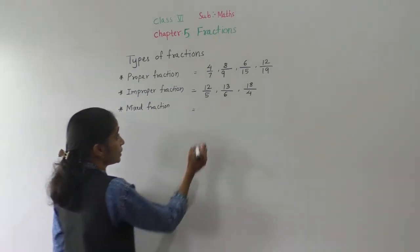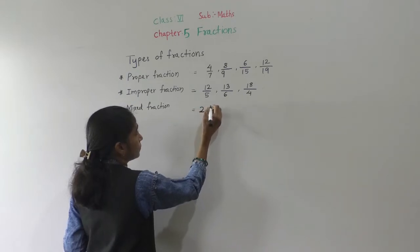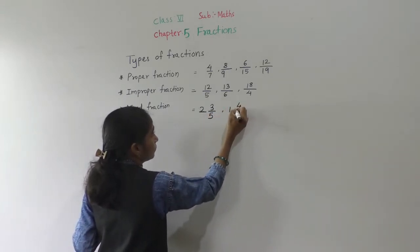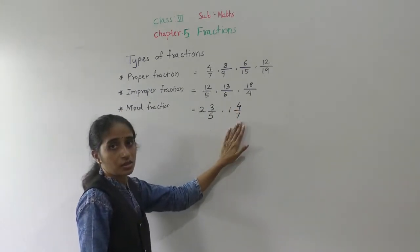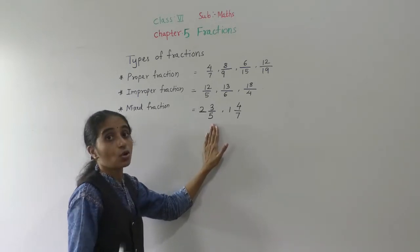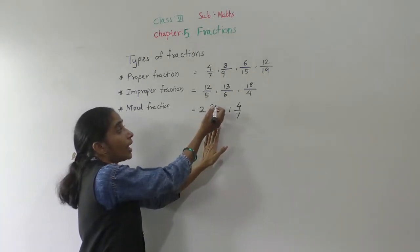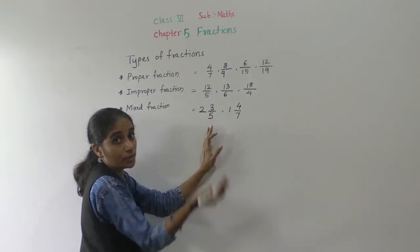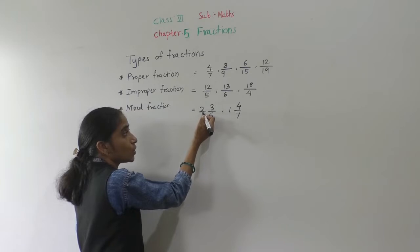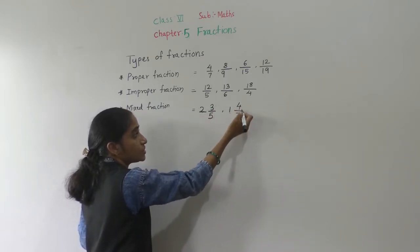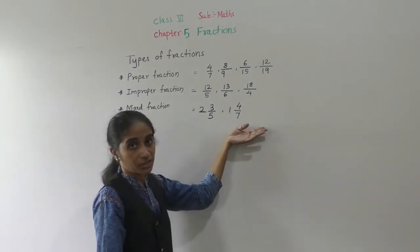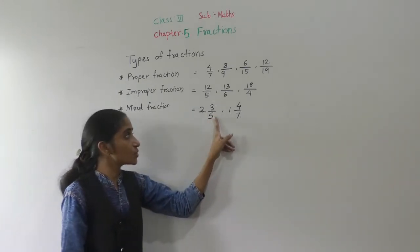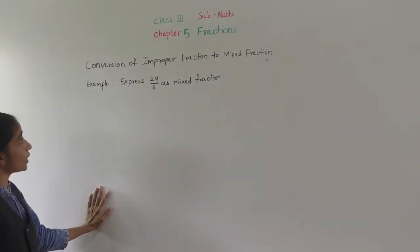Let's see now what is mixed fraction. A fraction which is a combination of a whole number and a proper fraction is called a mixed fraction. For example, 2 is the whole number and the remaining part is the proper fraction.